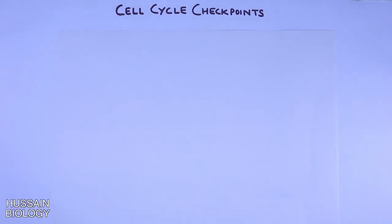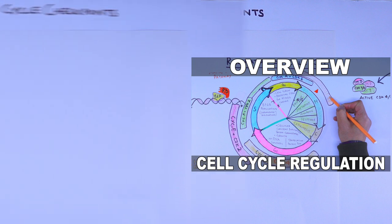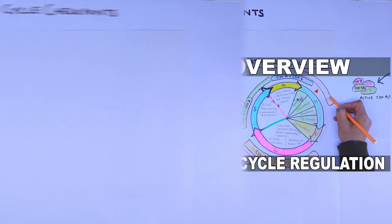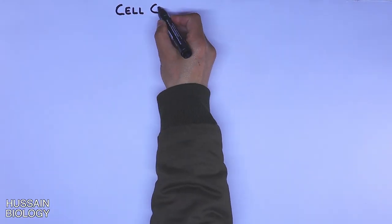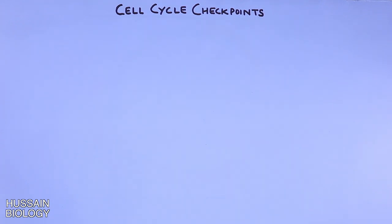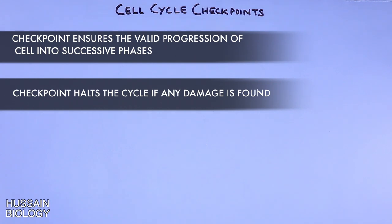In this series of videos, we have been discussing the cell cycle and its basic regulations, for which links are given in the description. In this video, we will be discussing cell cycle checkpoints, with a focus on the very first cell cycle checkpoint: the G1 checkpoint.